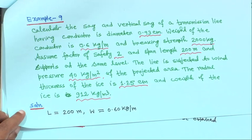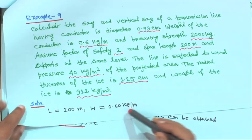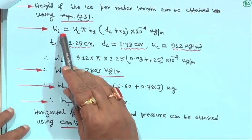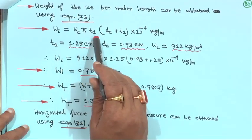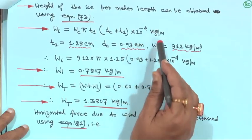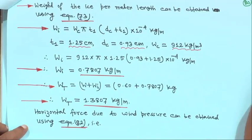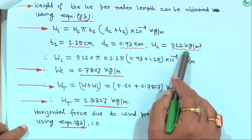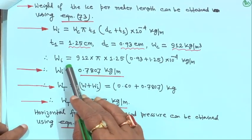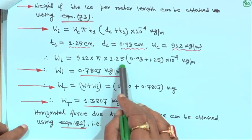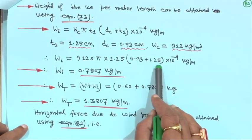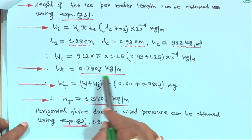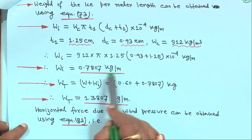L is 200 meter and W is 0.6 kg per meter. Weight of ice per meter length using equation 73: Wi is equal to Wc·pi·T1·(DC plus T1) into 10 to the power minus 4 kg per meter. T1 is 1.25 centimeter, DC is 0.93 centimeter, and Wc is 912 kg per meter cube. Substituting: Wi equals 912 into pi into 1.25 into (0.93 plus 1.25) into 10 to the power minus 4, giving Wi equal to 0.7807 kg per meter.